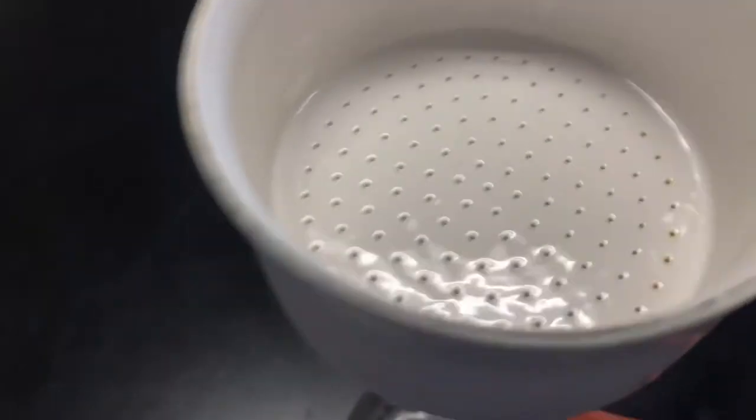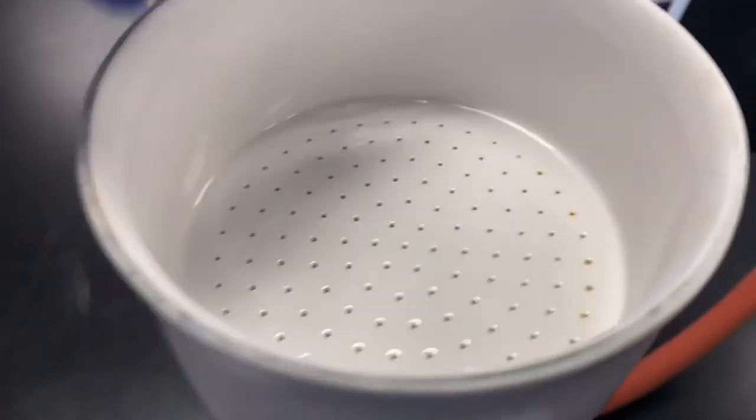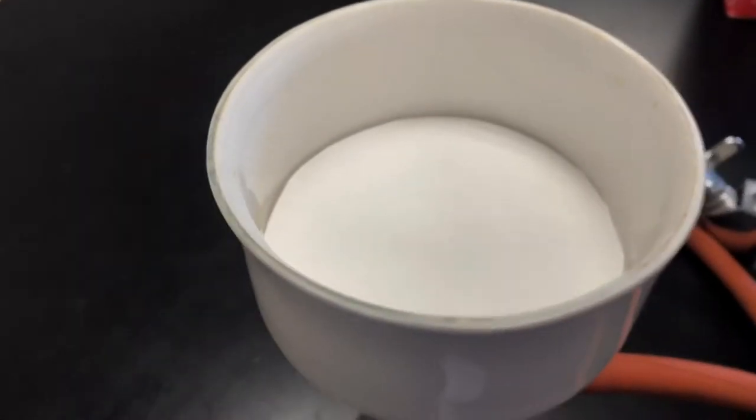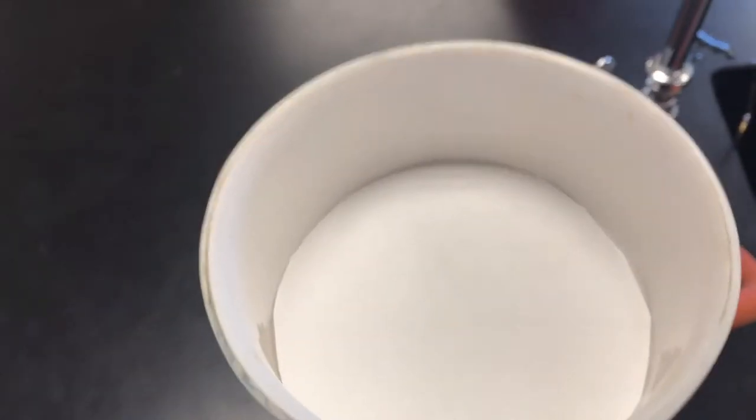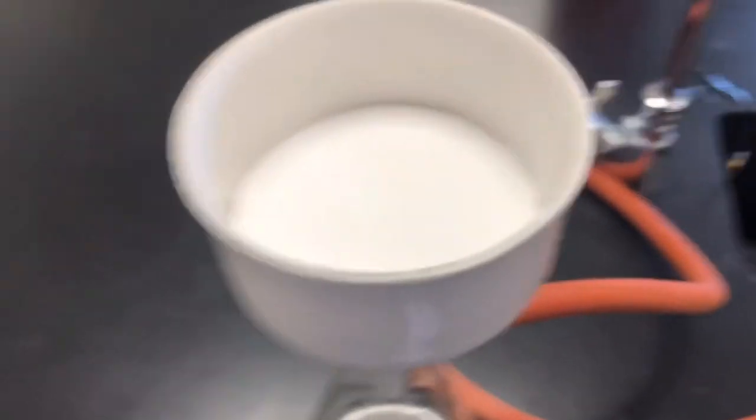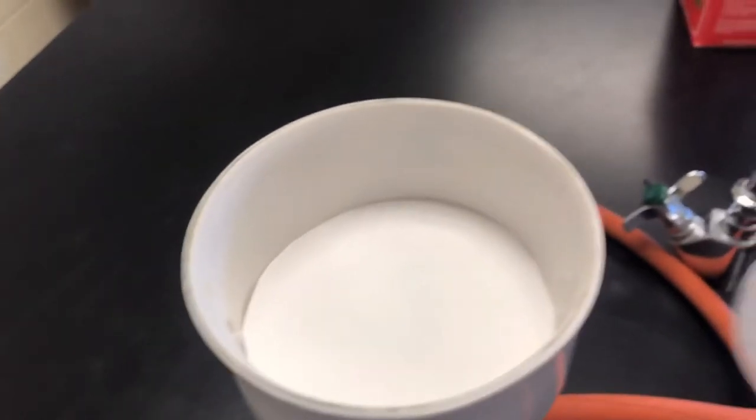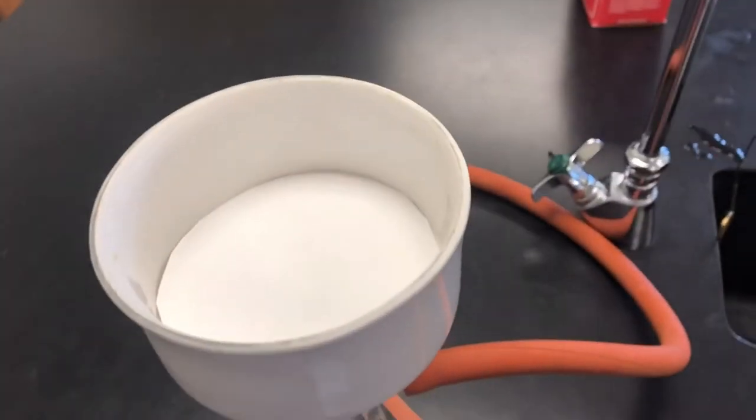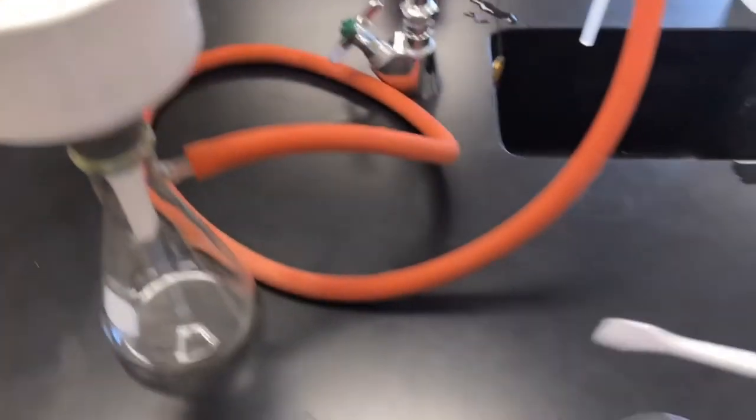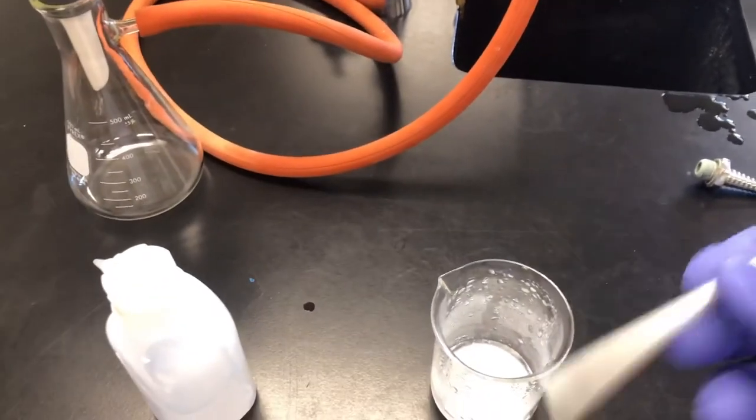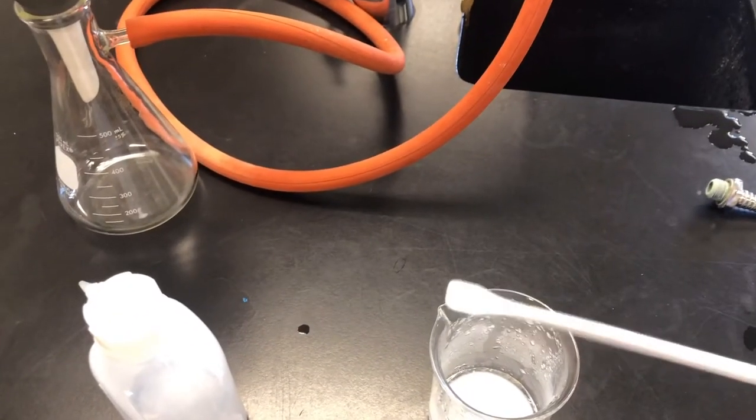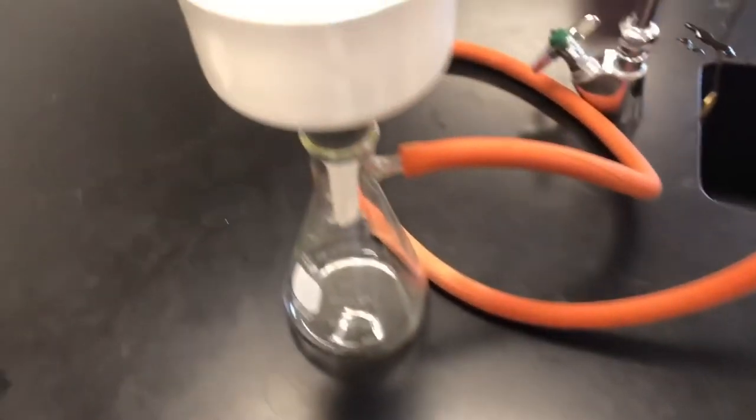Then we have this rubber piece that's going to make a nice airtight seal between this and the porcelain Buchner funnel. The Buchner funnel is porcelain and it has all of these little tiny holes. So whenever we put our filter paper in there it will pull the liquid through this very quickly.